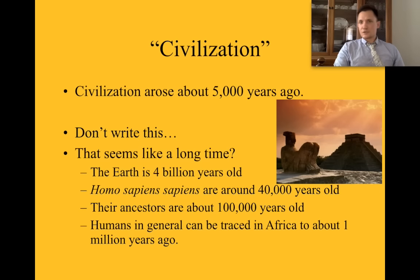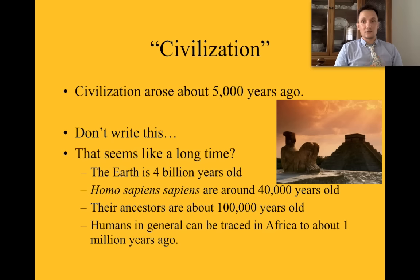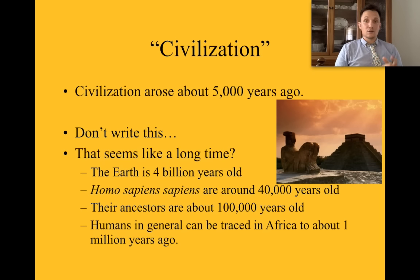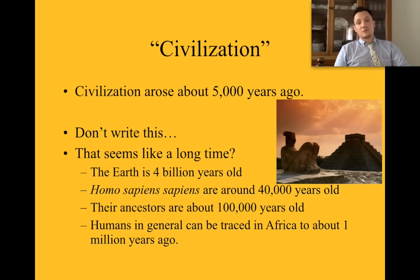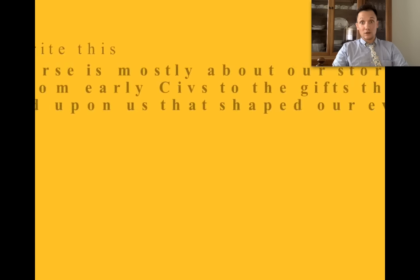Civilizations arose about 5,000 years ago. The Neolithic Revolution happened 10,000 years ago, and 5,000 years ago we started living in civilizations — in groups, with social cooperation, trying to stay together. That seems like a long time, but keep in mind the Earth is 4 billion years old, and Homo sapiens sapiens are around 40,000 years old. The kind of humans we are today have only been using 5,000 years of our potential. Our ancestors — Neanderthals, Cro-Magnons, the original Homo sapiens, Australopithecus — those are 100,000 years old. Humans in general can be traced to Africa, where all humans are believed to originate, to about a million years ago.